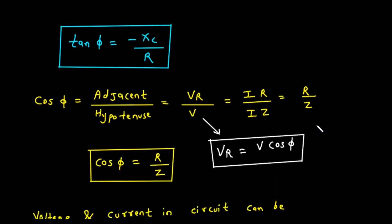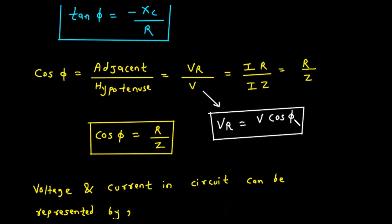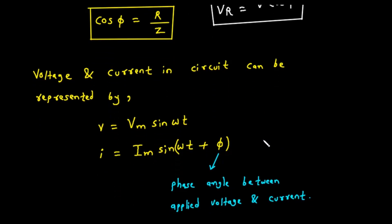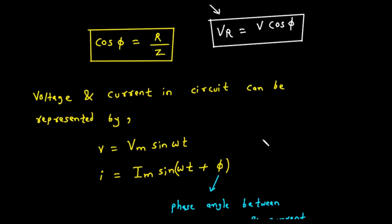We can also use the cosine function. The cosine of an angle is the ratio of the adjacent side to the hypotenuse. So cos of phi equals R divided by Z. This ratio, R divided by Z, is so important that it gets its own name, the power factor, which we will discuss in just a moment. From this cosine relationship, we can also see that VR equals V times the cosine of phi. This shows that the voltage across the resistor is a component of the total voltage.